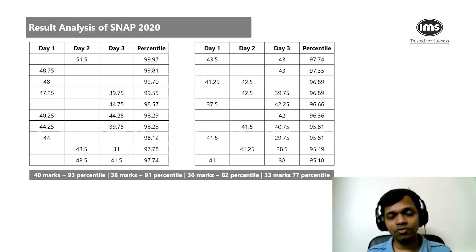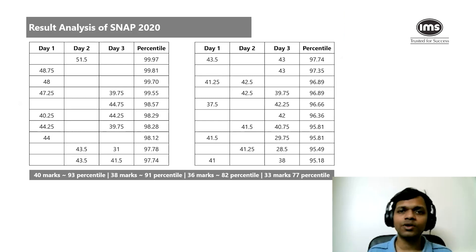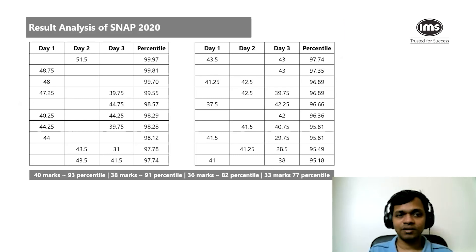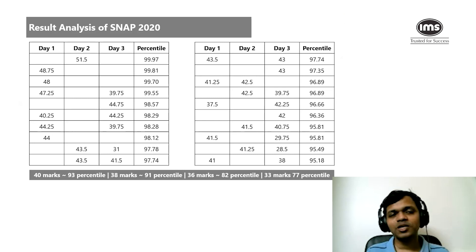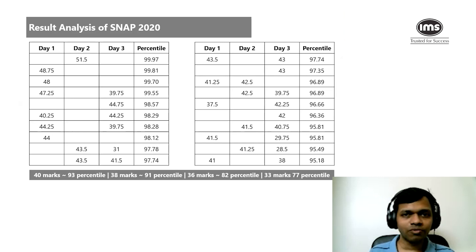That is why every mark is important. Attempt questions you know, but don't be too conservative — if you attempt only 30 questions, you won't get a great score even at high accuracy. The score will be lower, and based on last year's data it would not have given a great result. This year the difficulty might increase slightly — I don't think it can go further down. Whether similar or harder, the approach remains the same: solve as many questions as you can correctly and maintain your speed.